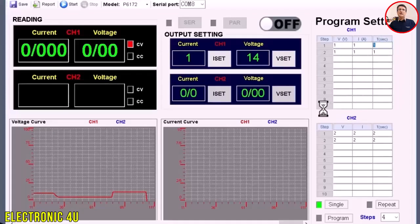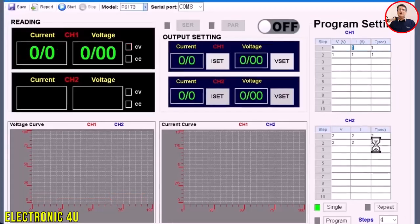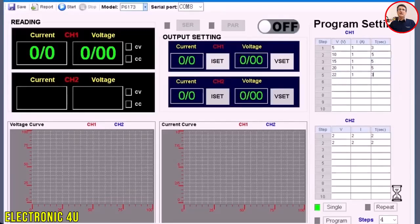I have entered several steps. In the Step field, we choose how many steps to run. If we select Single, the output runs only once according to the number of steps, and the device stops at the last setting. If we select Repeat, after finishing the steps, the device starts the settings again from the beginning.